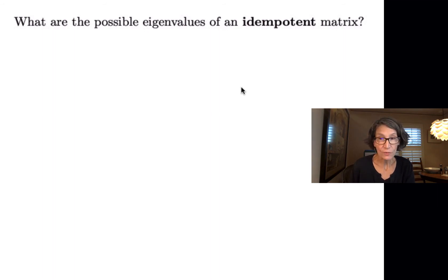Remember what it means for a matrix to be idempotent. First of all, the matrix A is idempotent if it's square, and if you multiply it by itself, A squared is equal to A. So it has to be an n by n matrix, and A squared, A times A, is equal to A.